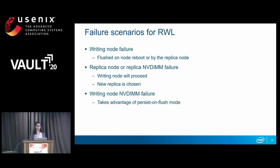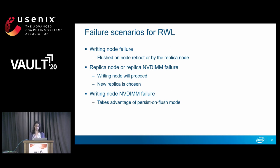Here is how we handle failure scenarios for replicated write log, which has replication on storage nodes. If the primary writing node has failed, all previously appended writes will be readable and flushed — either on reboot or by a replica. Writes which did not finish appending won't be readable, even if entries may have been persisted. In replicated write log, we flush data first, so if the node has failed, we don't have log entries pointing to the data — effectively that data is lost in such a case.